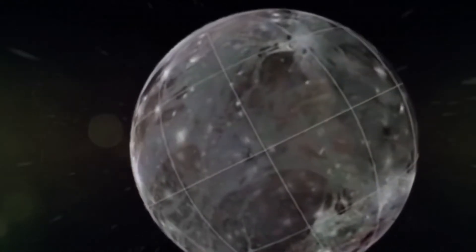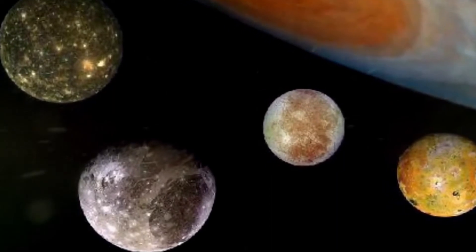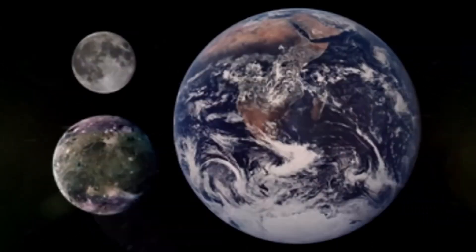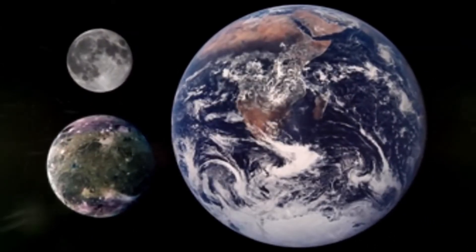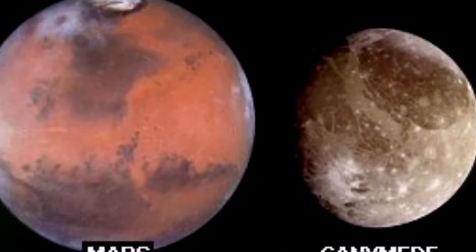But although Ganymede is large in size, its mass is inferior to Mercury's by more than twice. The reason for this lies in the low density of the object—it is only twice the value of water.